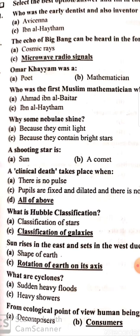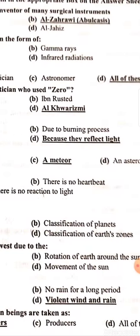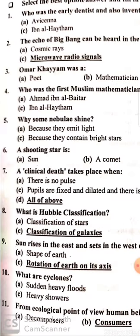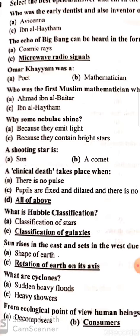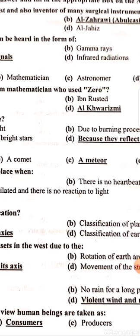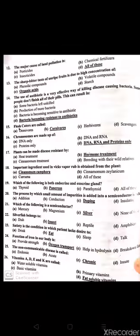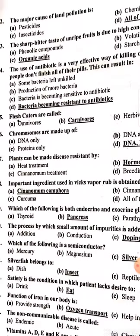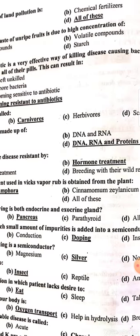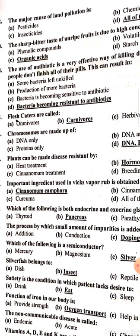What is a cyclone? Violent wind and rain is called a cyclone. From an ecological point of view, human beings are taken in as consumers.